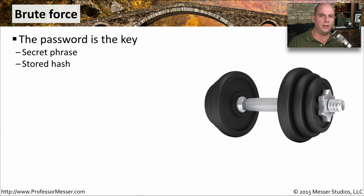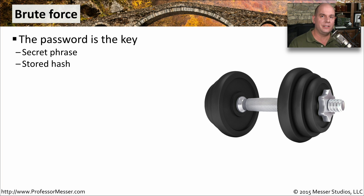In previous videos, we've talked about wireless networks that have cryptographic vulnerabilities and operating system vulnerabilities. There were many ways to get into these systems without using any type of credentials. But what if everything is locked down? That means the only way in would be to use a username and a password, and if you don't know them, you obviously are not going to have access.